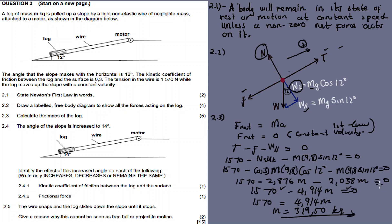For 2.4, the angle of the slope is now increased to 14 degrees and we are still pulling the log up the incline. Identify the effect of this increased angle on each of the following — state only increases, decreases, or remains the same. The coefficient of kinetic friction between the log and the surface: it remains the same.